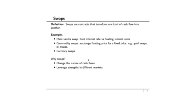Swaps are contracts that transform one kind of cash flow into another. A plain vanilla swap transforms a fixed interest rate cash flow into a floating interest rate cash flow. A commodity swap exchanges the floating price of a commodity for a fixed price for the same commodity — examples include gold swaps, oil swaps, and so on. Currency swaps allow you to swap a cash flow in one currency for a cash flow in another currency.